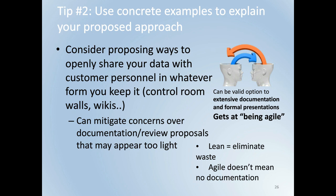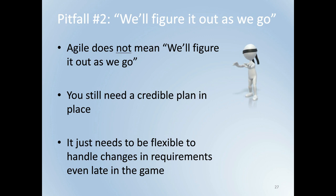Pitfall number two: 'we'll figure it out as we go.' An example of what not to do in your proposal is to use lean and agile buzzwords with some high-level words about agility, but to provide no real credible plan or concrete examples of how you plan to meet contractual deliverables. Being agile doesn't mean figure it out as we go. It is true that with an agile approach we need to be able to adapt to changing requirements even late in the game, and we continually improve our processes as we go — but we don't create our processes for the first time as we go.